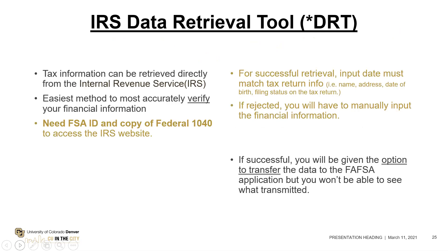One of the components within the FAFSA application is the IRS Data Retrieval Tool — the Internal Revenue Service tool that allows you to tap directly into the IRS to find your tax document information. It will give you access to add your financial information to the FAFSA on your behalf, so you don't have to figure out what number goes on which line. If the student is selected for verification — which is a random selection of about 30% of the population — using the Data Retrieval Tool to import information directly into the FAFSA can definitely help avoid delays in processing your aid.